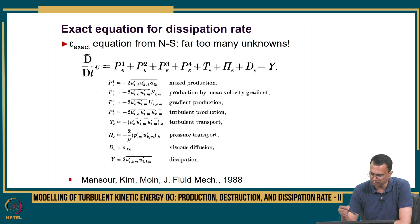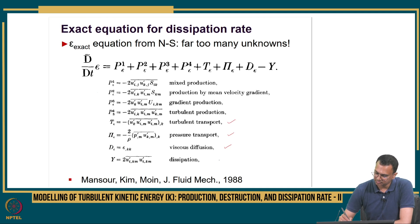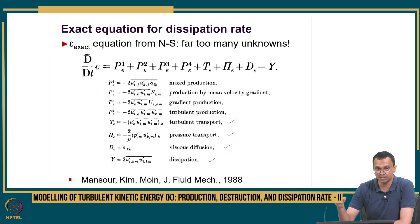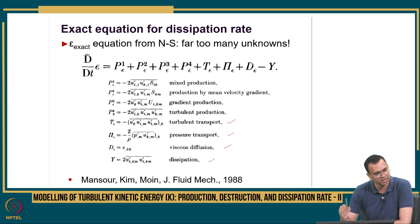We have turbulent transport (turbulent diffusion), pressure diffusion, and viscous diffusion — those 3 terms were present in the turbulence kinetic energy equation also. There is also a dissipation rate term for the dissipation rate of turbulence kinetic energy. The capital Y term is a sink term — it represents the destruction rate of the dissipation rate of turbulence kinetic energy.